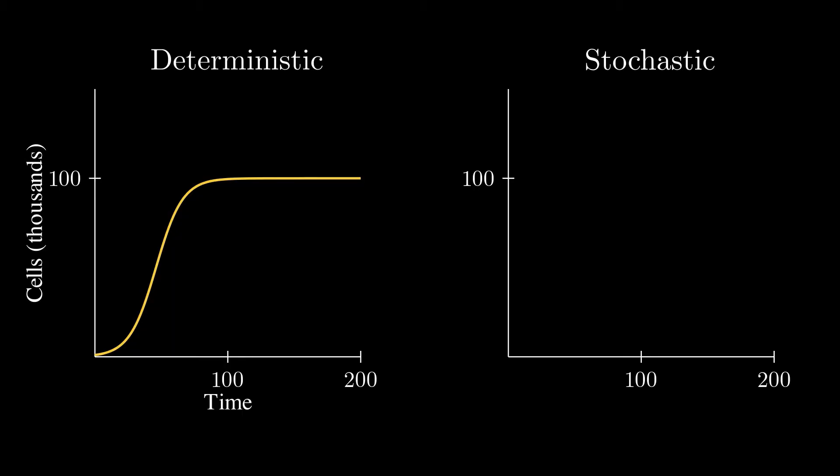This plot on the left is what a deterministic simulation of the cell population might look like. It's nice and smooth, and if we run the simulation again without changing anything, it'll look exactly the same the second time.